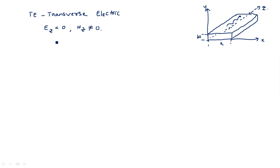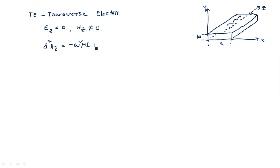With the assumption that Ez is equal to zero and Hz is non-zero, we already know the standard wave equation: ∇²Hz equals minus ω²με·Hz.